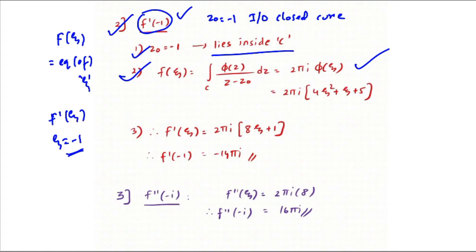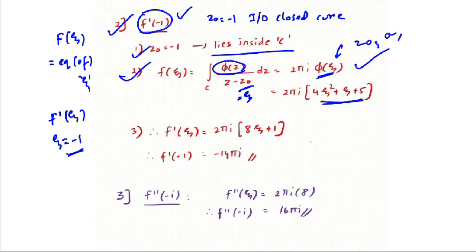Note: z₀ and ζ refer to the same singularity — do not be confused when different notation is used. Taking the first derivative: f'(ζ) = 2πi(8ζ + 1). Substituting ζ = −1 gives f'(−1) = 2πi(−8 + 1) = 2πi(−7) = −14πi.